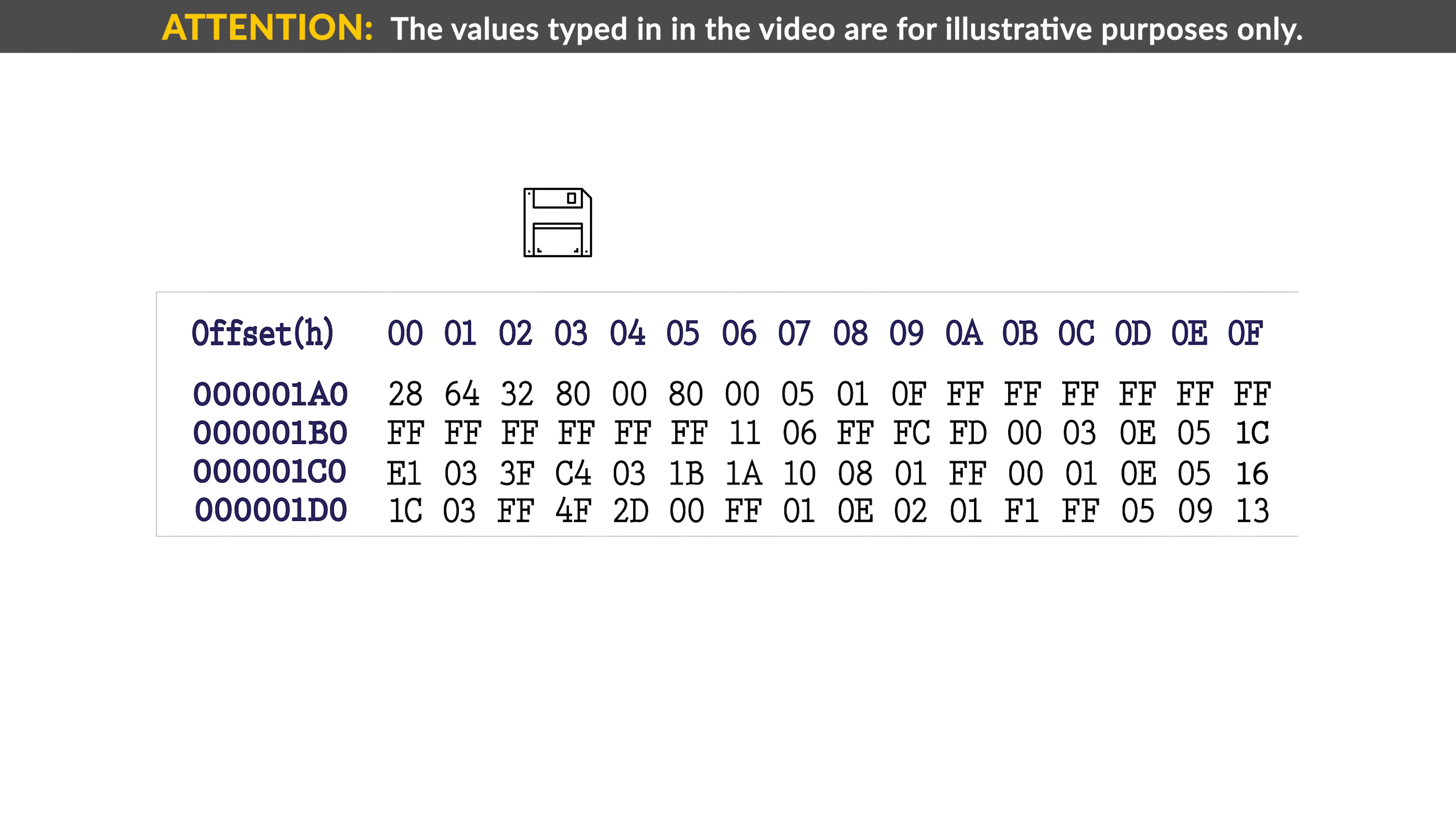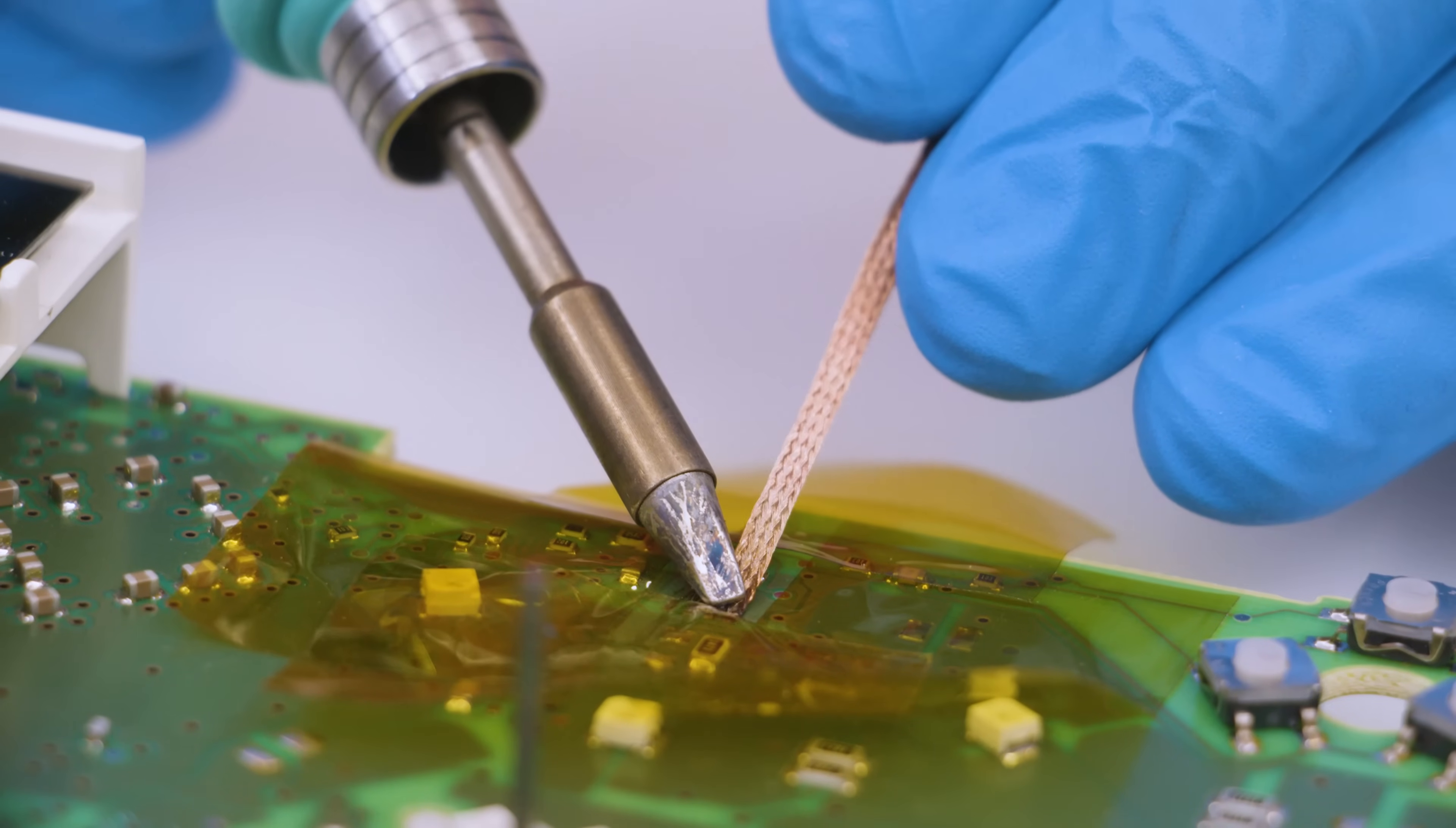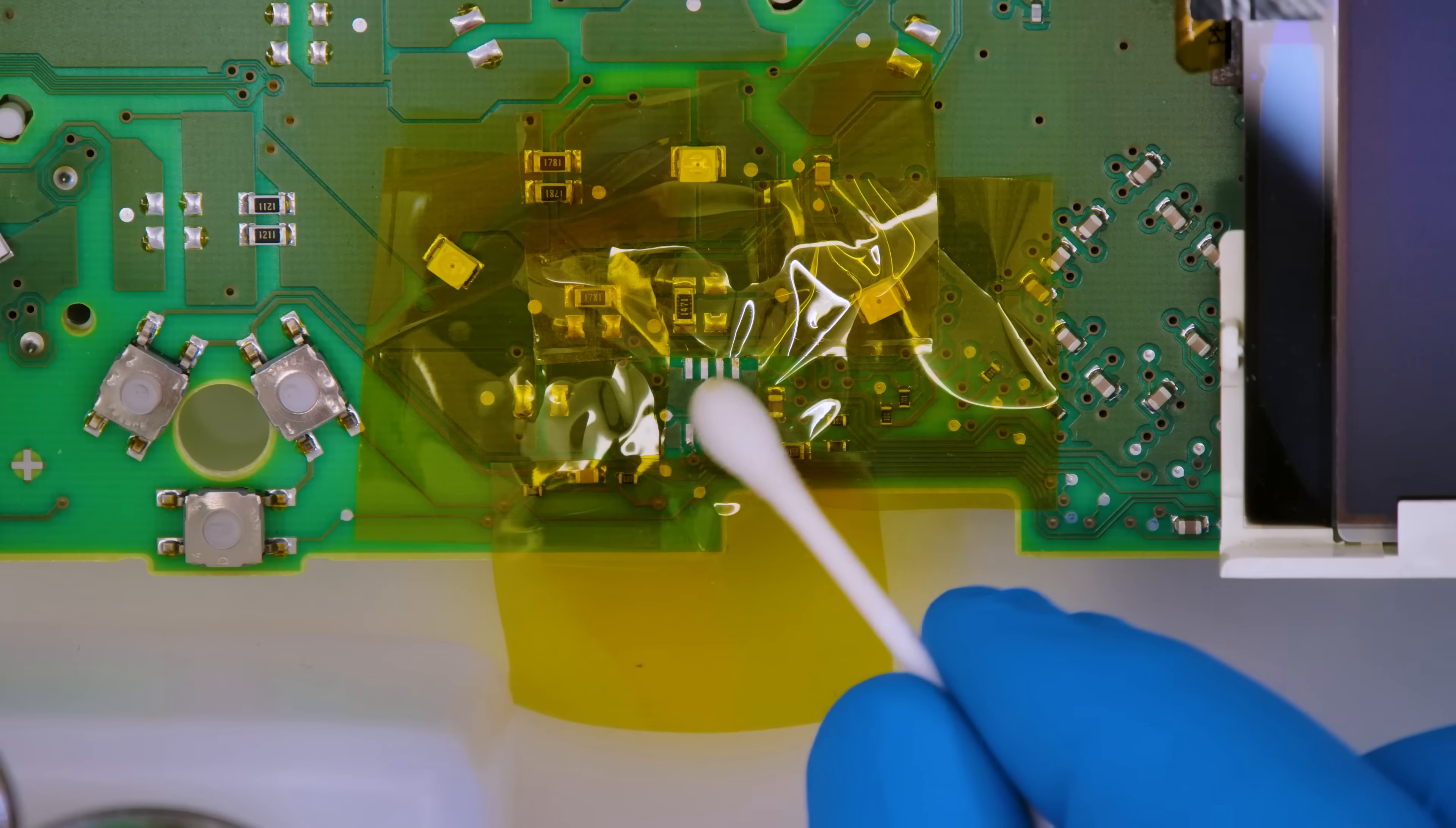Save the file just modified and upload it on the EEPROM. Unclip the EEPROM from the programmer. Before soldering it back, remove the tin excess from the PCB with the soldering iron with chiseled tip and a solder wick. Clean with some solvent.